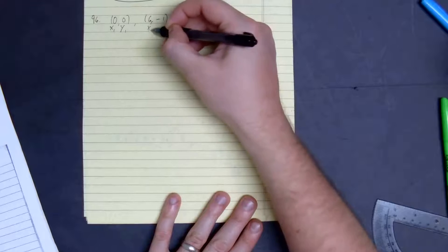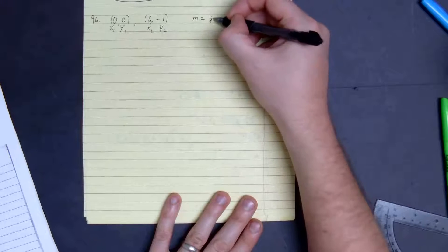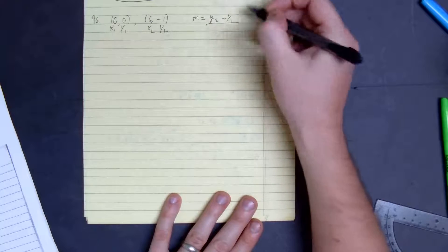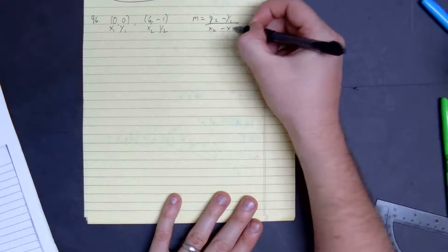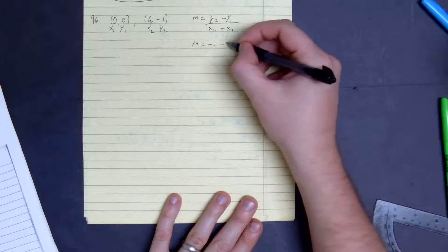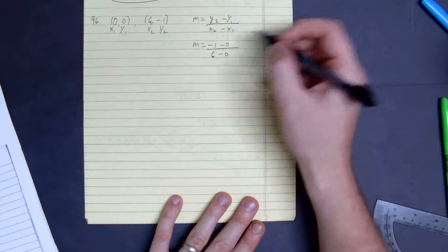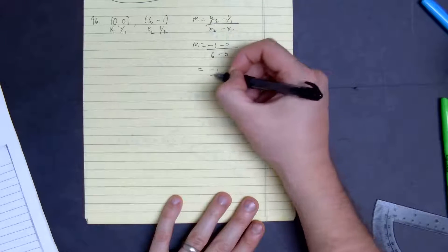x1, y1, x2, y2. So slope is equal to y2 minus y1, the change in y's over the change in x's. If m is equal to 1 minus 0 divided by x2, which is 6 minus 0, it's negative 1 over 6.